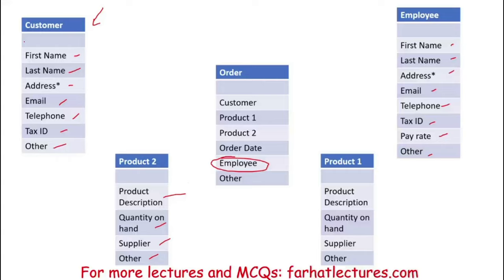Right now these separate tables kind of look like flat files. Here's what we're going to do: for each table, we're going to create a primary key. For the order table, we need to identify each order by something unique to that table. We can't use the customer name because we could have more than one Adam Farhat. We can't use the product because many customers buy the same product. So we're going to create an order ID unique to every order — something like an alphanumeric ID, for example 1X4F. We're going to call this the primary key.